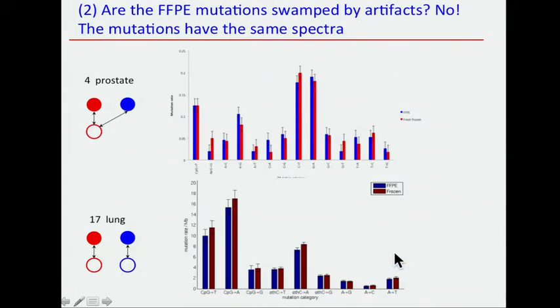What are the patterns of the spectra of mutations that we're finding? Here's the prostate and the lung. The FFPE is blue and the frozen is red. We find the same spectra of mutations — not only the number is the same, but the distribution of mutations is the same, meaning they're not dominated by some artifact caused by the fixation. Otherwise it wouldn't follow the distribution of real somatic mutations. So we're happy that there are really no artifacts in FFPE.